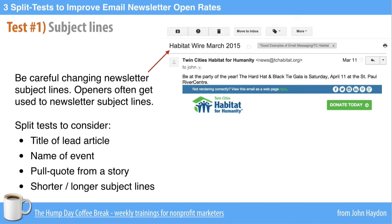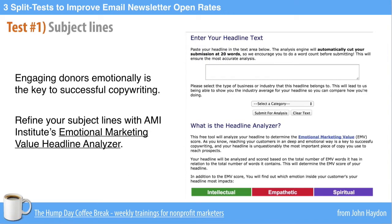You can test the title of a lead article — instead of 'Habitat Wire, March 2015,' they might put the title of a lead article, the name of an event that's coming up, a pull quote from a story, or an outcome story. You also want to test shorter and longer subject lines. There's a great tool called the Emotional Marketing Value Headline Analyzer. You just type in your subject line, and it gives you the emotional marketing value — how likely this subject line is to grab someone's attention. The higher the score, the more you'll grab people emotionally with your subject line.